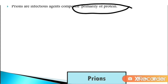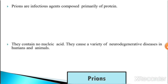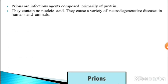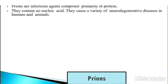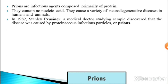The next topic is prions. Prions are infectious agents composed entirely of protein — they contain no nucleic acid. They cause a variety of neurodegenerative diseases in humans and animals.